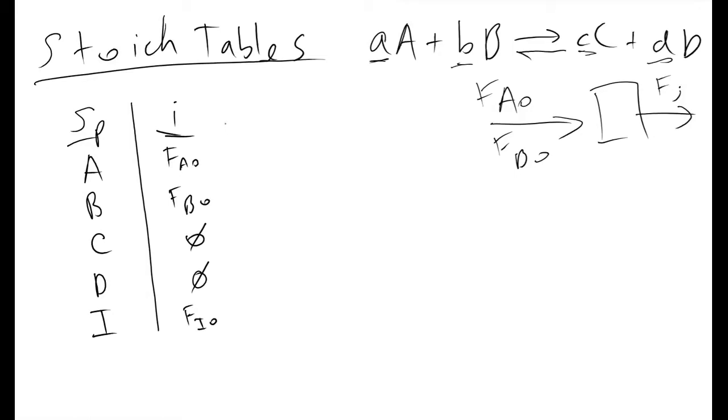The next column that we look at in a stoic table is the change. By making sure that we have correctly defined our limiting reactant, the change column will correspond to minus FA0 times x. It's very important to make sure we get this part right because it will dictate everything else except for our inert species.